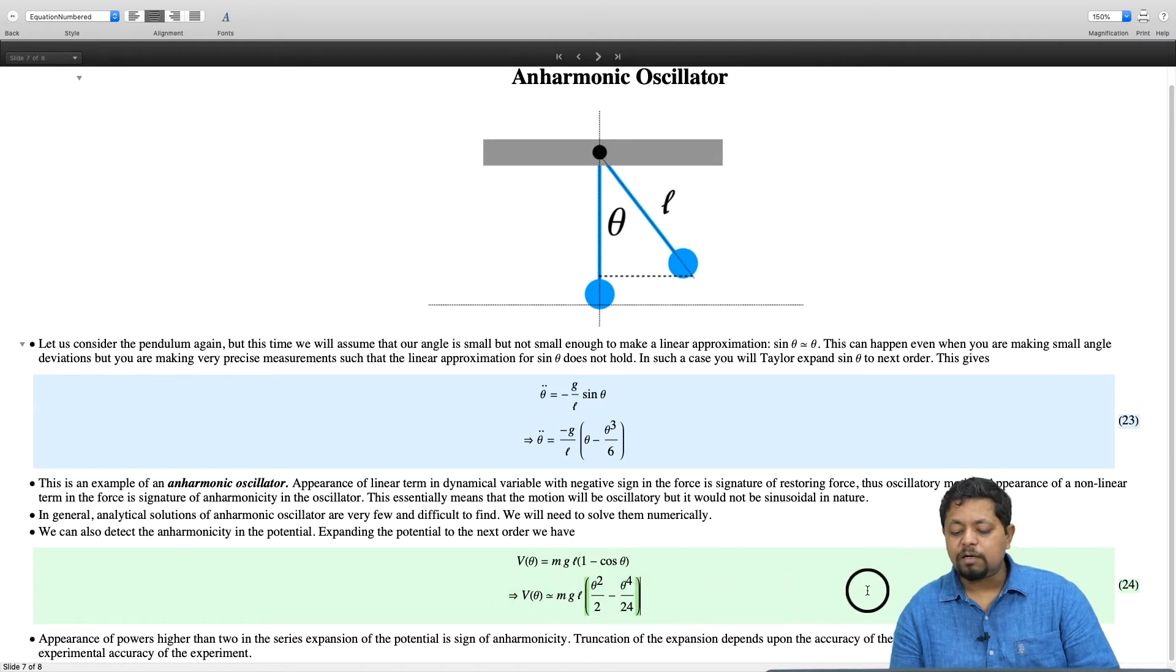Now, why did we not include the other terms over here or other terms in this particular case? That will depend on at what accuracy you want to calculate. Suppose you want to calculate perturbatively and really your angles are reasonably small but not small enough to consider them as harmonic oscillators. Then you can truncate this expansion up to this term with theta power 4 by 24 in the potential.